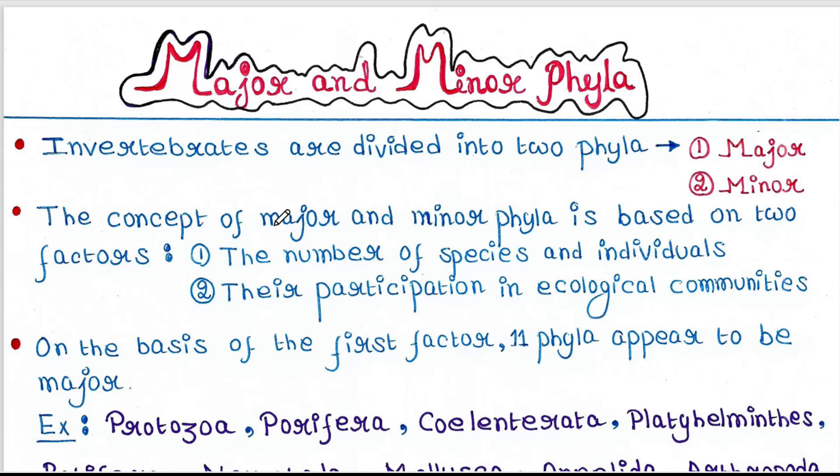The concept of major and minor phyla is based on two factors. Factor 1 is the number of species and individuals. The phyla where the number of individuals and species is high is recognized as major, whereas where the number of individuals and species is less, the phyla is recognized as minor.